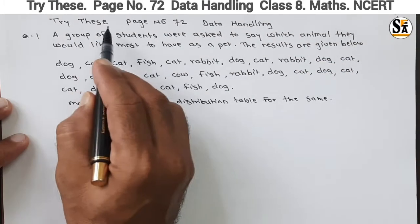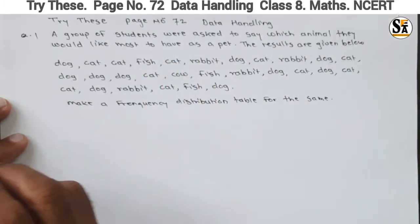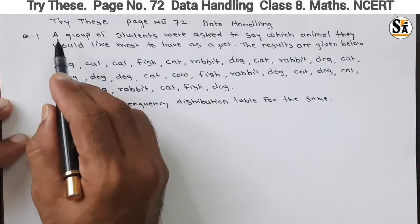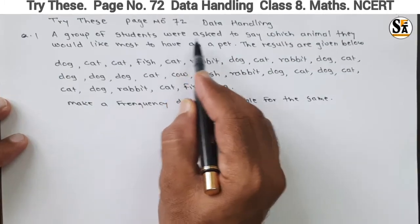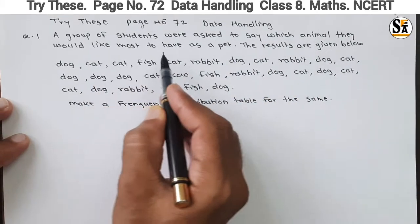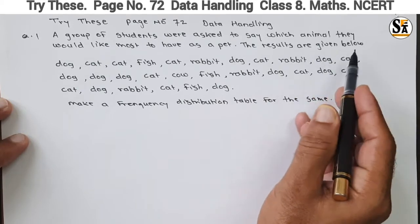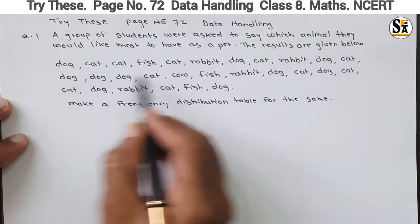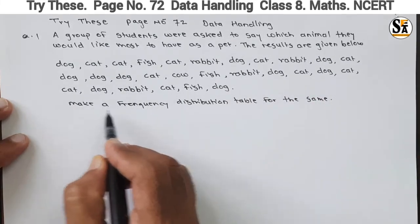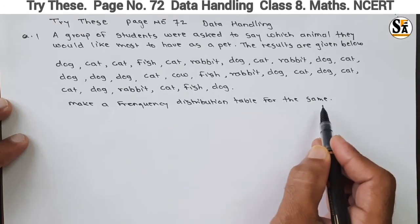See the question given under the 'Try This' section on page number 72, Data Handling chapter. The question is: a group of students were asked to say which animal they would like most to have as a pet. The results are given below. What is asked? Make a frequency distribution table for the same.